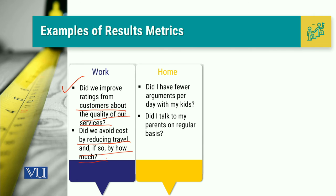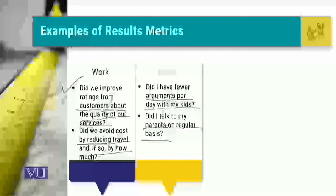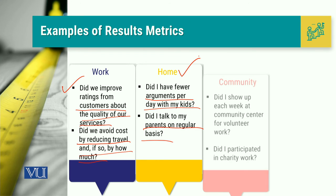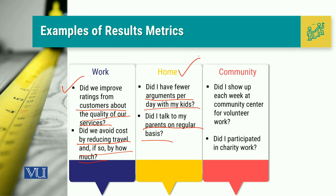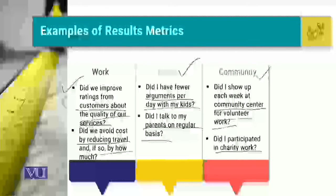For the home domain, examples can be: did I have fewer arguments per day with my kids? — if so, that means I am improving the relationship. Did I talk to my parents on a regular basis? — if I am giving attention and time to my parents, that means I am doing well in the home domain. For community, did I show up each week at the community center for volunteer work? Did I participate in charity work? — that means I am contributing towards the betterment of society.